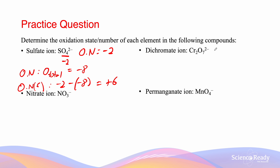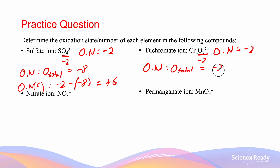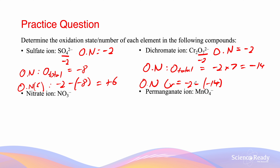In the dichromate ion Cr₂O₇²⁻, the oxidation number of the ion equals −2. Because the oxidation state of oxygen is −2, the total oxidation state for all seven oxygens equals −2 × 7 = −14. Therefore, the oxidation number of chromium equals −2 minus −14 = +12, and this total is then divided by two since there are two chromiums, giving each chromium an oxidation state of +6.